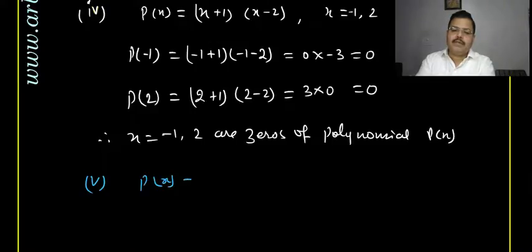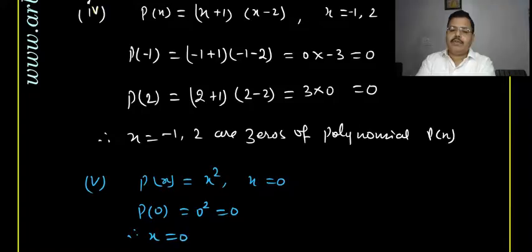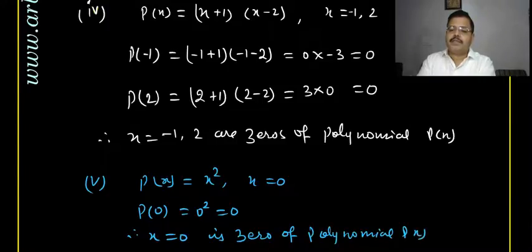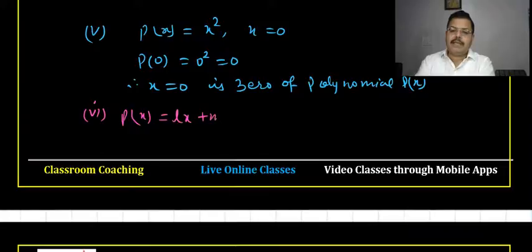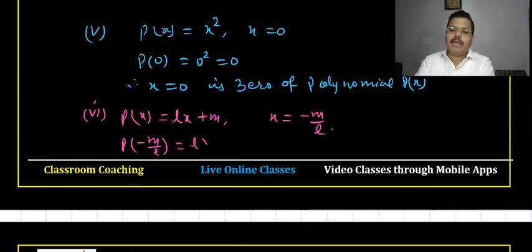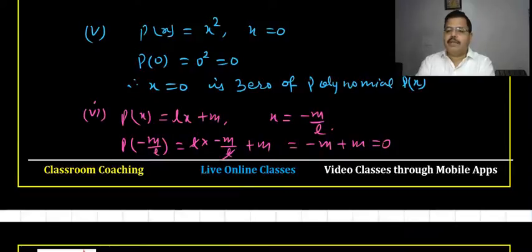Fifth: p(x) = x², x = 0. p(0) = 0² = 0, so x = 0 is a zero of p(x). Sixth: p(x) = lx + m, x = −m/l. Put x = −m/l: p(−m/l) = l(−m/l) + m = −m + m = 0. Therefore x = −m/l is a zero of p(x).